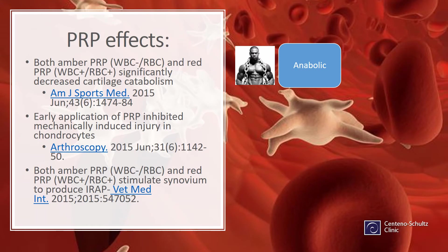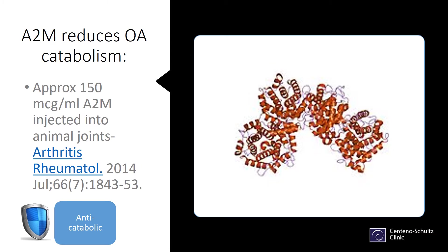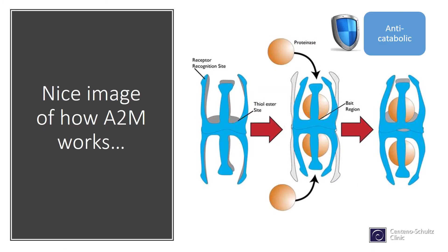We know that PRP can stop breakdown because it's anabolic, and there are studies that show that. We also know that a chemical called A2M — alpha-2 macroglobulin — can stop breakdown. Based on a recent study, it takes about 150 micrograms per ml of A2M to do that.